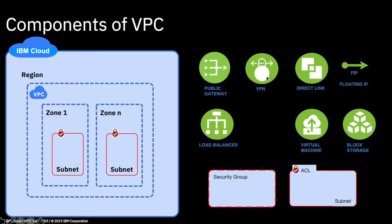You can create VPNs using a VPN-as-a-service, which allows private network access to your VPC. Direct Link is a service that provides direct network connectivity between the IBM Cloud and your on-premises environment. A floating IP is a public IP address that you can assign to certain components within your VPC — most notably virtual server instances and load balancers. Think of floating IPs as public IP addresses.